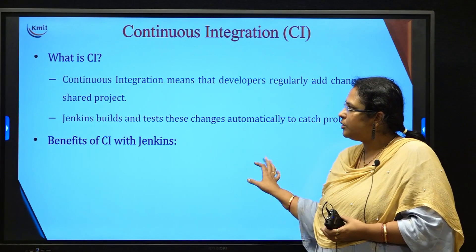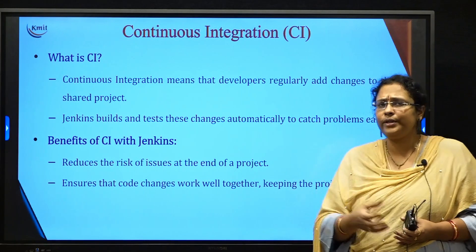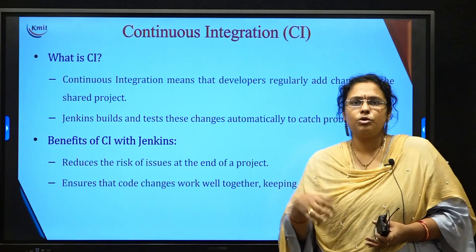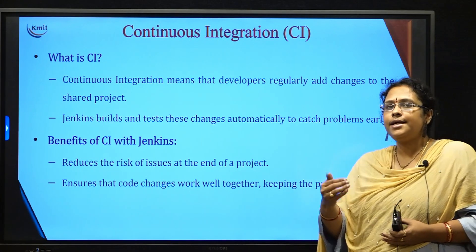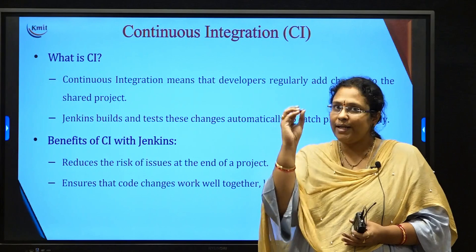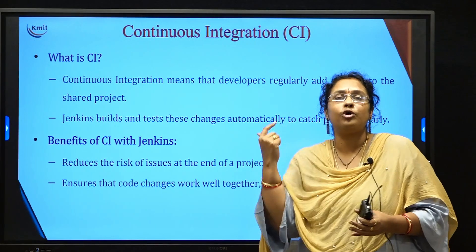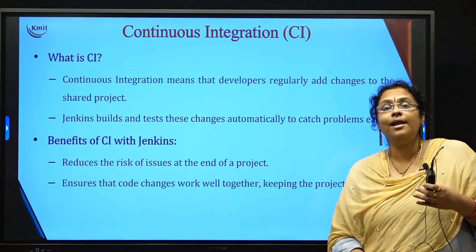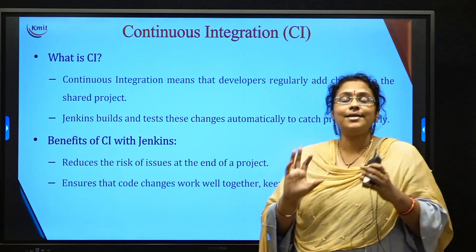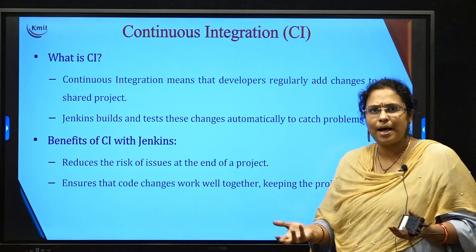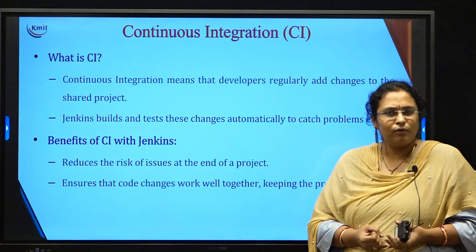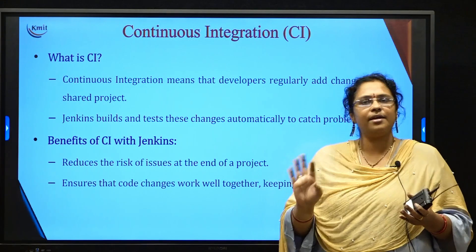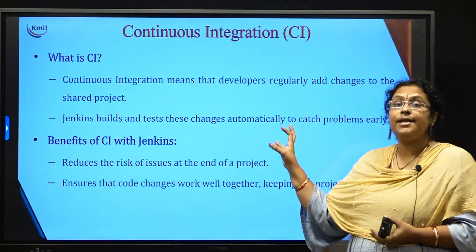Now let us understand continuous integration. Jenkins is a CI/CD tool — continuous integration and continuous delivery. Continuous integration means whenever any developer performs any change in the project, Jenkins will get automatically triggered. It will take that new updated code from GitHub, build it, and automatically test it. The advantage is it reduces the time of the developer, and with each new change you can easily identify any errors.